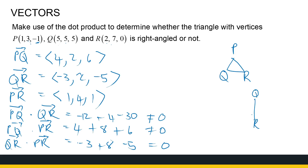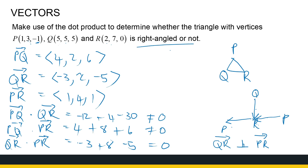Since QR is perpendicular to PR, the triangle is a right-angled triangle. We can just look at three vectors made from those vertices — we don't need to check both directions for each pair. So yes, it is a right-angled triangle. In the next video, we're going to look at the cross product, which is another type of multiplication for vectors.